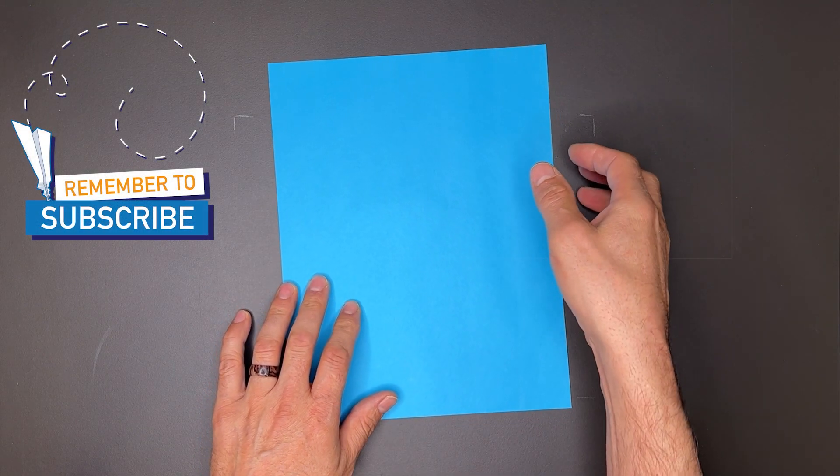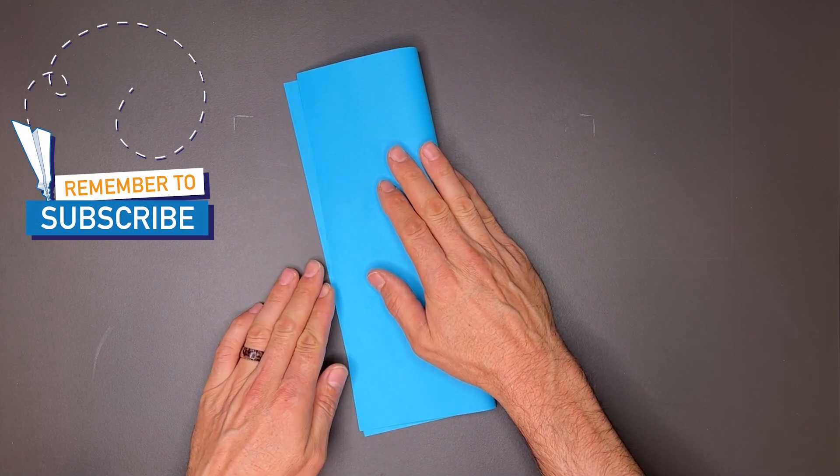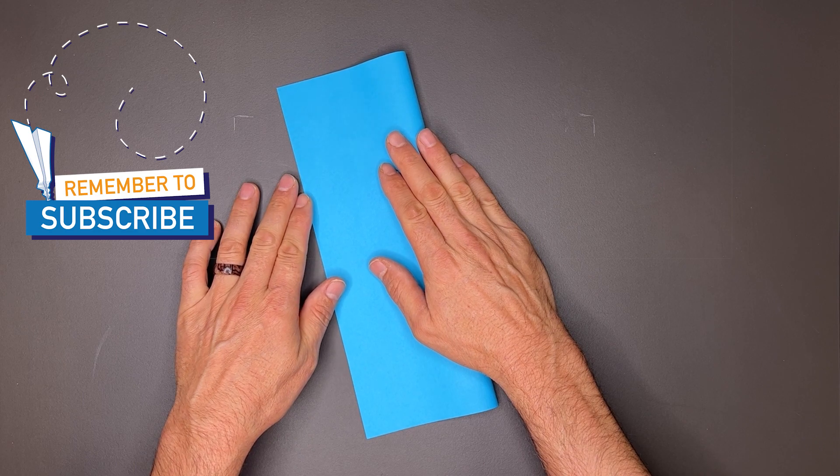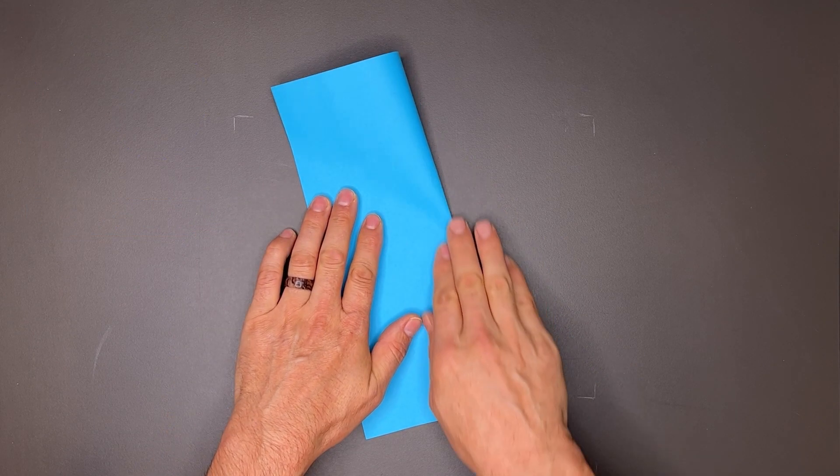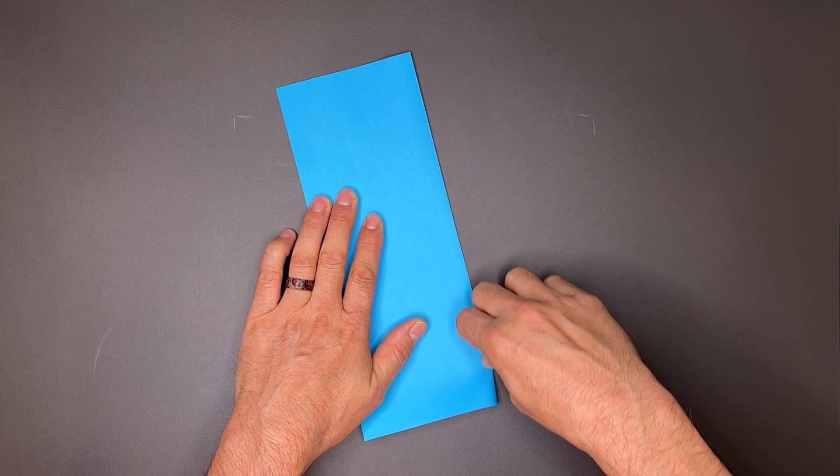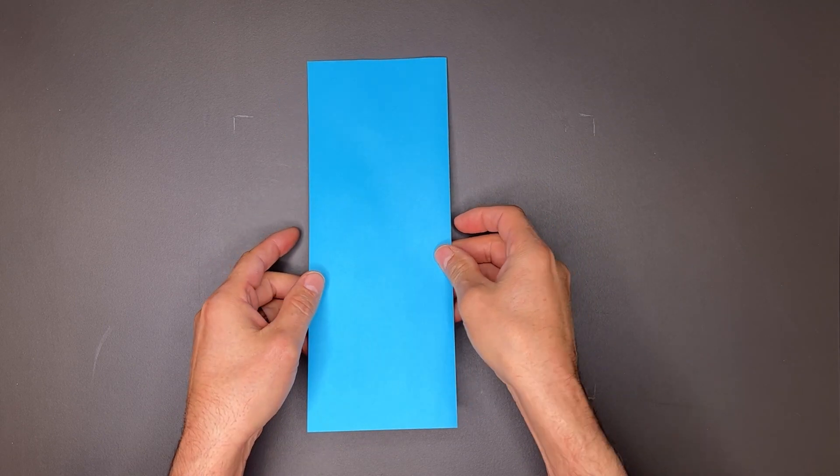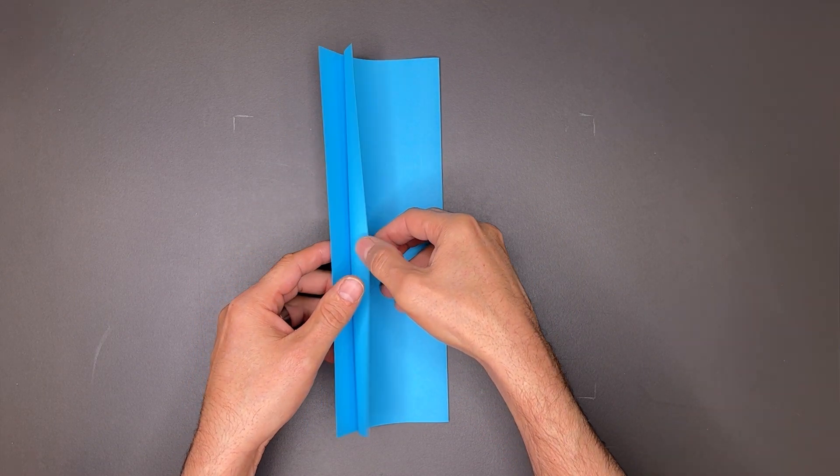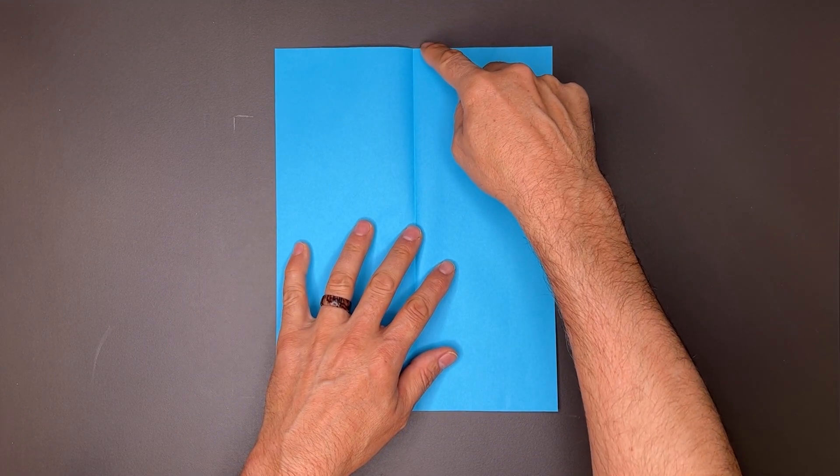I'll begin by taking the right edge to the left. Take your time here, make this center crease as symmetrical as possible. Once we have that, we'll open it up and turn it over.